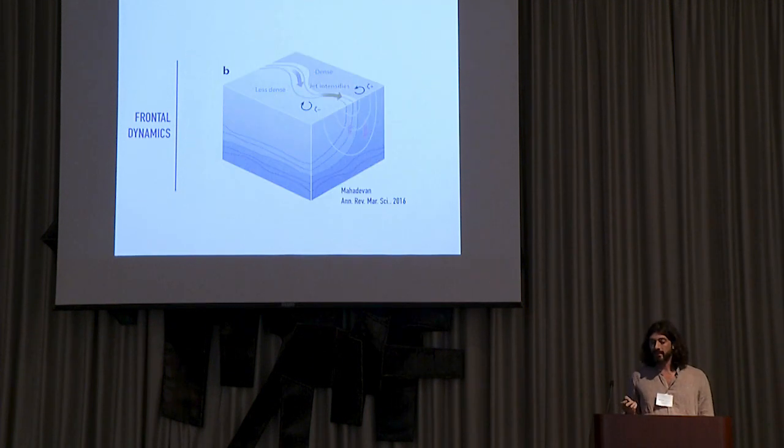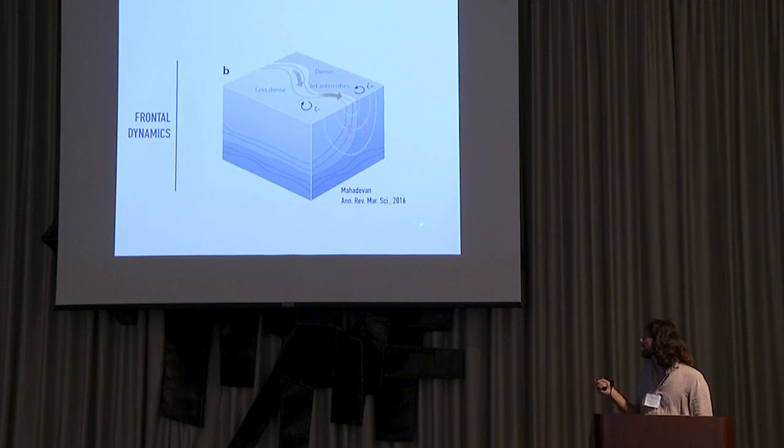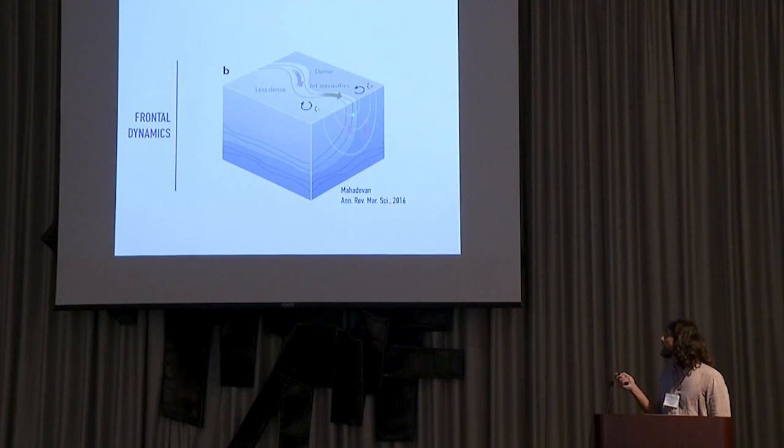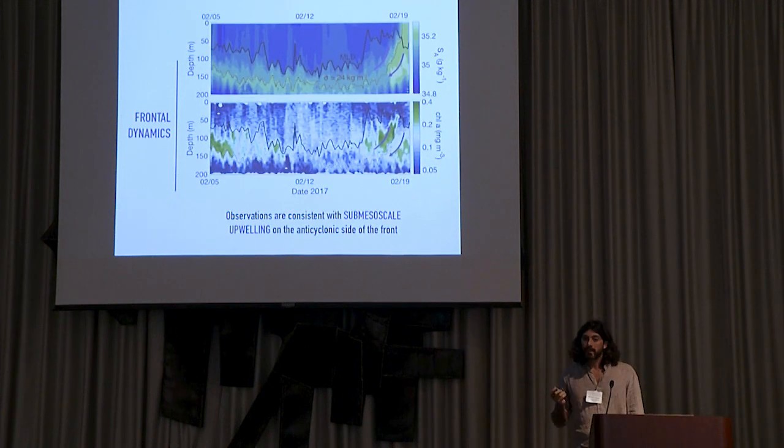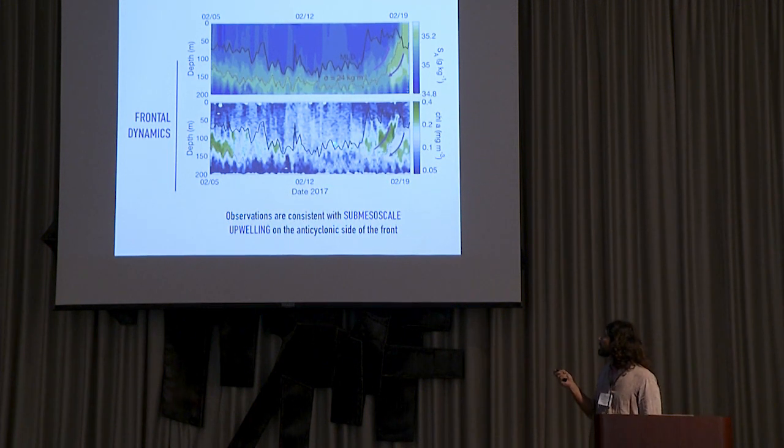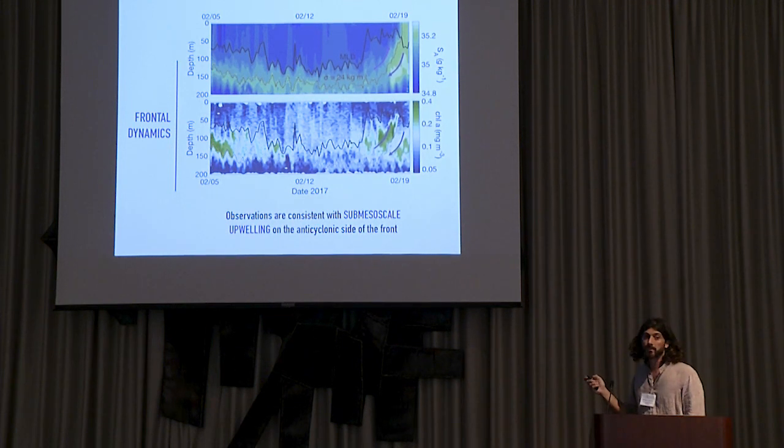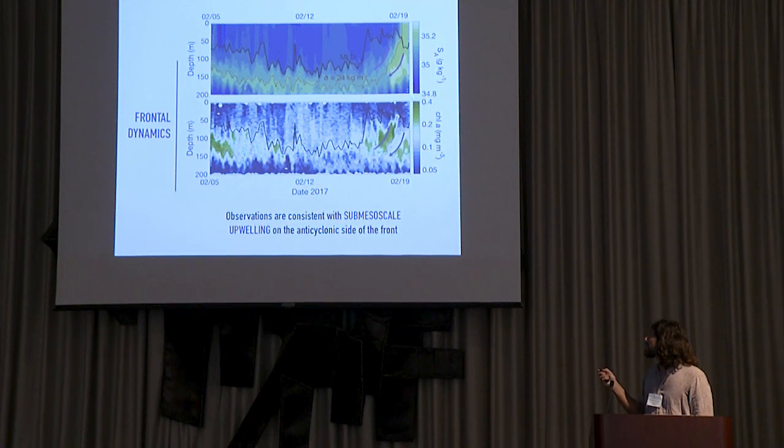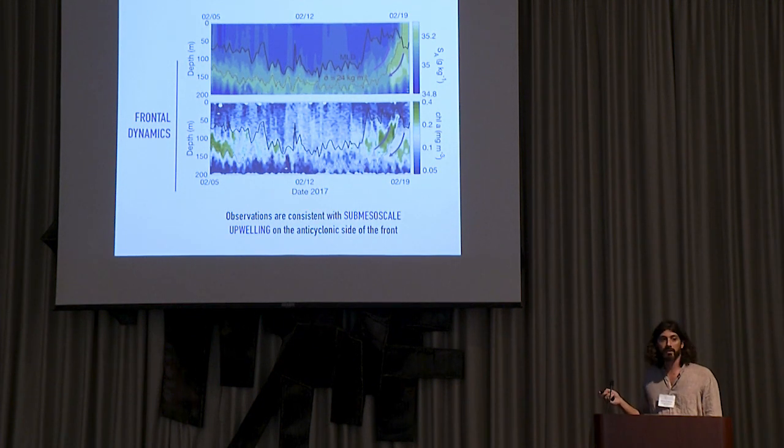There's probably a reason why. The reason has been described in the literature. I'm taking this from a review by Mahadevan from 2016. If this is the front, when it intensifies, you expect there to be upwelling on the light side and downwelling on the dense side. If we bring these arrows to the previous contour, you can see this is consistent with what we see. If here we have upwelling, we are bringing up these deep nutrients on this side of the front and stimulating the phytoplankton community, whereas the same doesn't happen on the other side. Actually, you have downwelling, so you depress the phytoplankton community on that side.